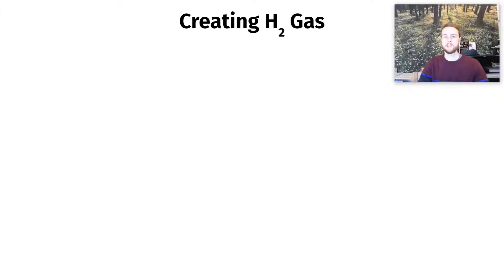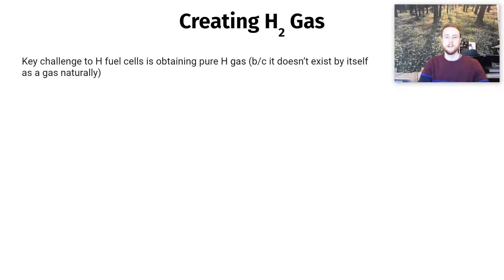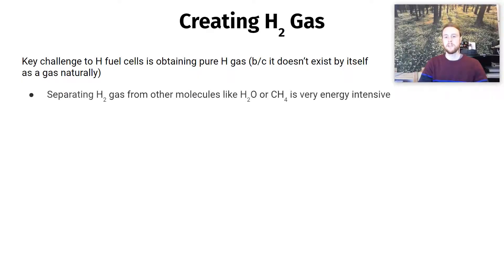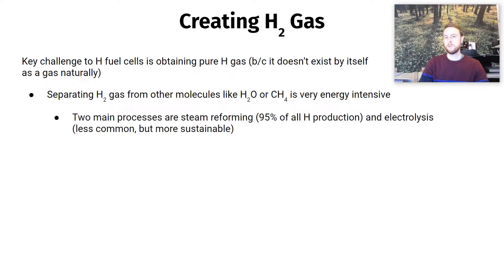Now we'll talk about where we actually get hydrogen gas from, which is the fuel source in hydrogen fuel cells. The key point is that hydrogen in its pure form is difficult to obtain — it doesn't exist by itself naturally. We have to separate hydrogen gas from molecules that already contain it. The two most common sources are water (H2O) and methane (CH4). This is very energy intensive — it takes a lot of energy to separate out hydrogen.